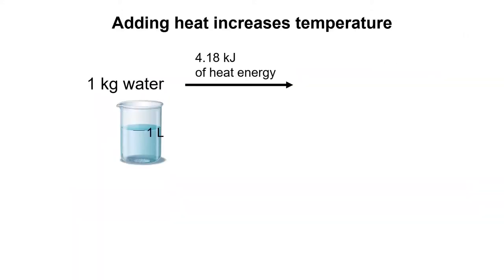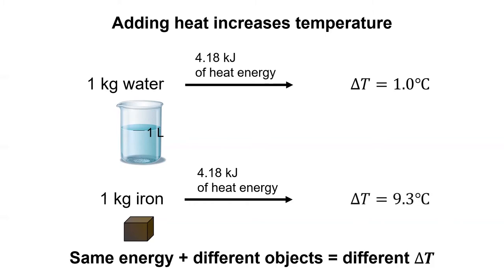It is well known that if we add energy to a substance, the temperature will increase. For example, if we add 4.18 kilojoules of energy to a liter of water, the temperature of the water will increase by exactly one degree Celsius. What you may not know is that if you add the same amount of energy to a different substance, such as one kilogram of iron, the temperature will increase by a different amount.